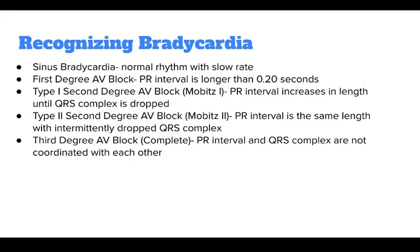When recognizing bradycardia, sinus bradycardia can be recognized with normal rhythm with a slow rate. First degree AV block is when the PR interval is longer than 0.2 seconds. Type 1 second degree AV block is when the PR interval increases in length until the QRS complex is dropped. For type 2 second degree AV block, the PR interval is the same length with intermittently dropped QRS complex. And for third degree AV block, the PR intervals and QRS complex are not coordinated with each other.